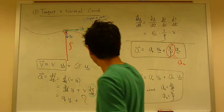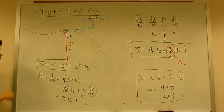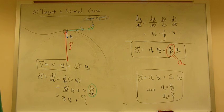So this is the expression for acceleration, and this is velocity for a tangent normal coordinate system. Next, let's look at the example.